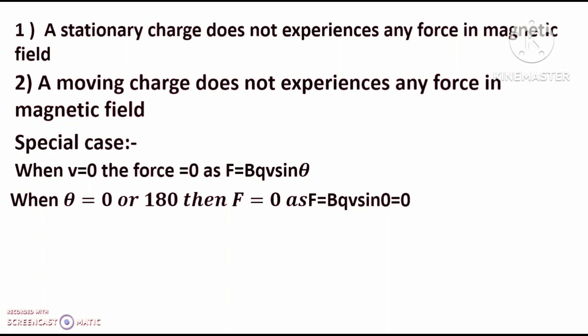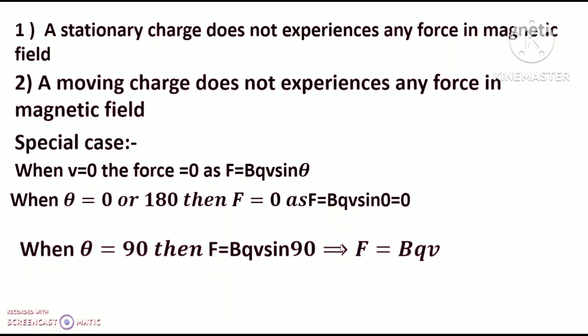In other words, a charged particle experiences force inside a magnetic field only if it does not move parallel to the direction of the magnetic field. When theta equals 90 degrees, F = qBv sin 90 = qBv. This is the maximum value, meaning the force is maximum when the charged particle moves perpendicular to the magnetic field.